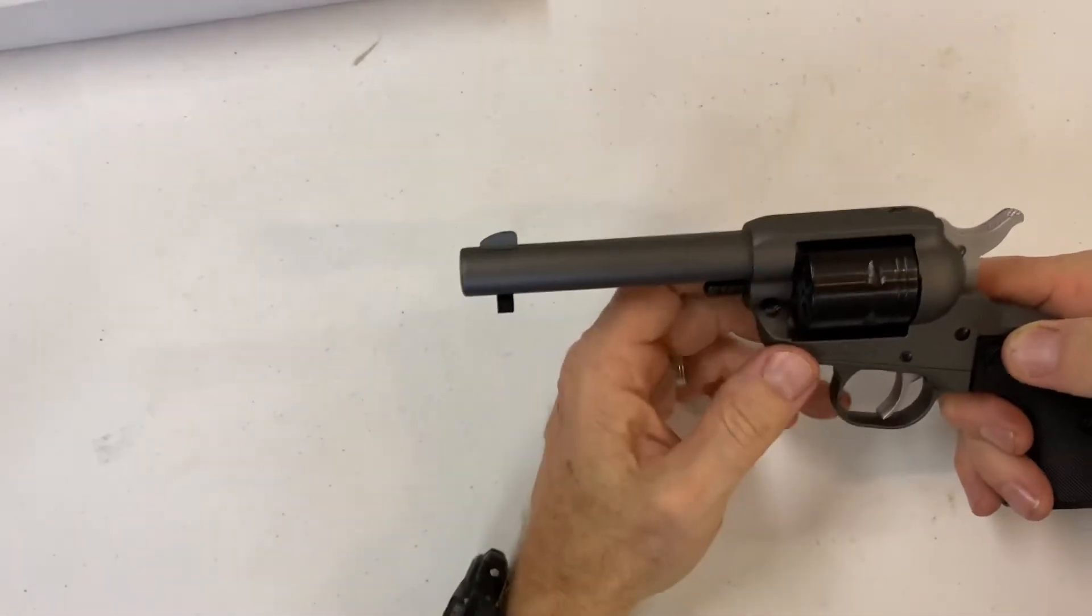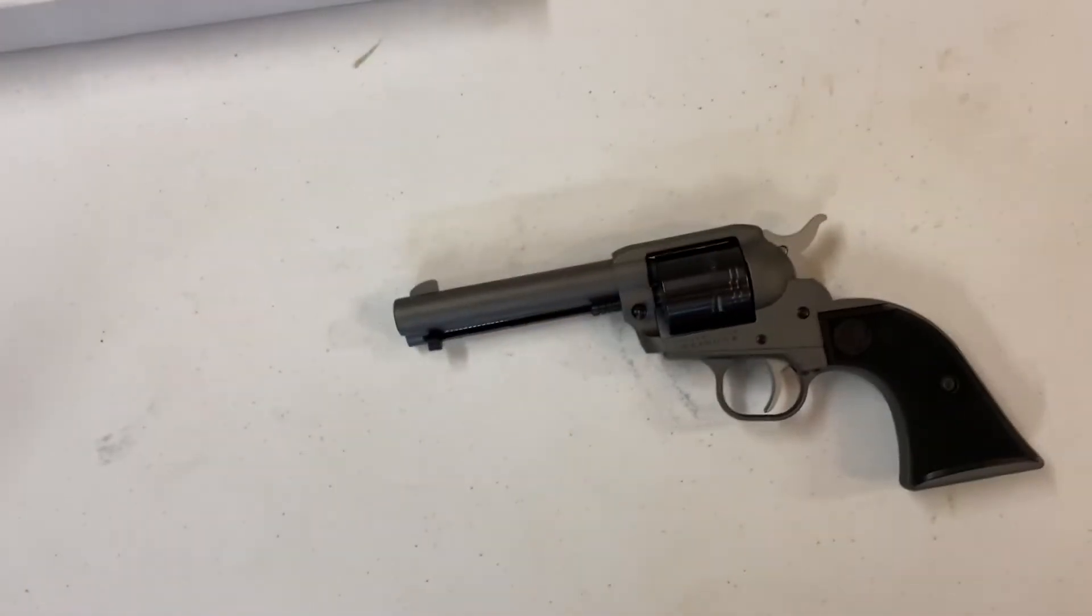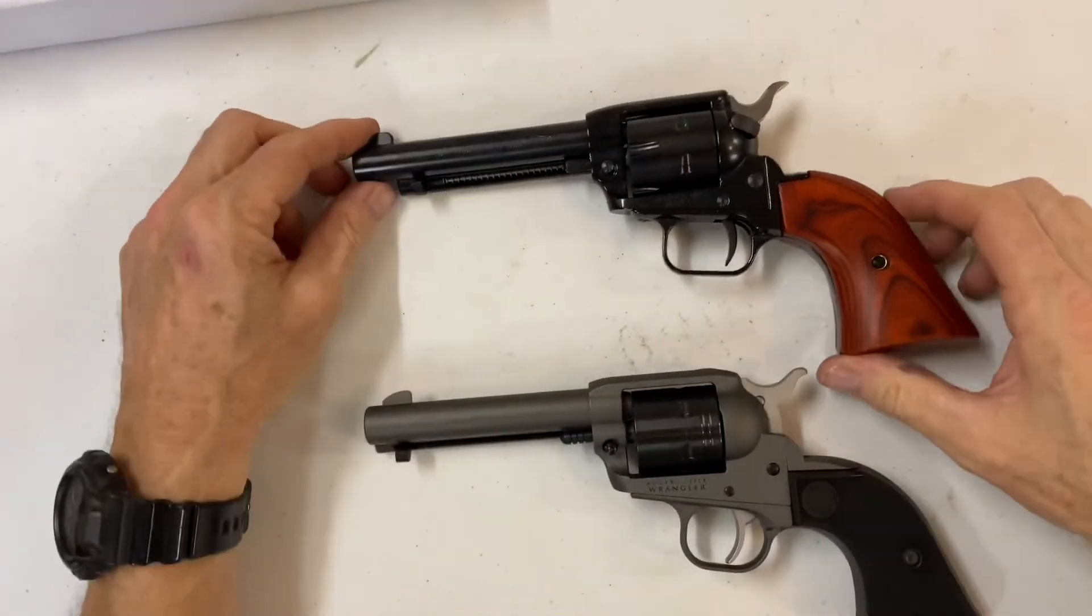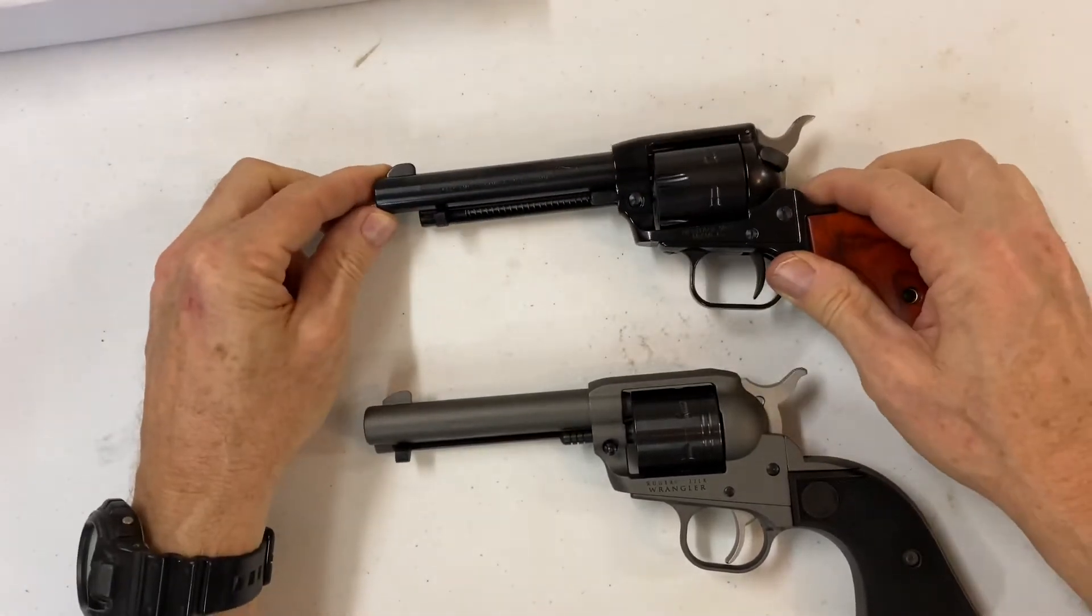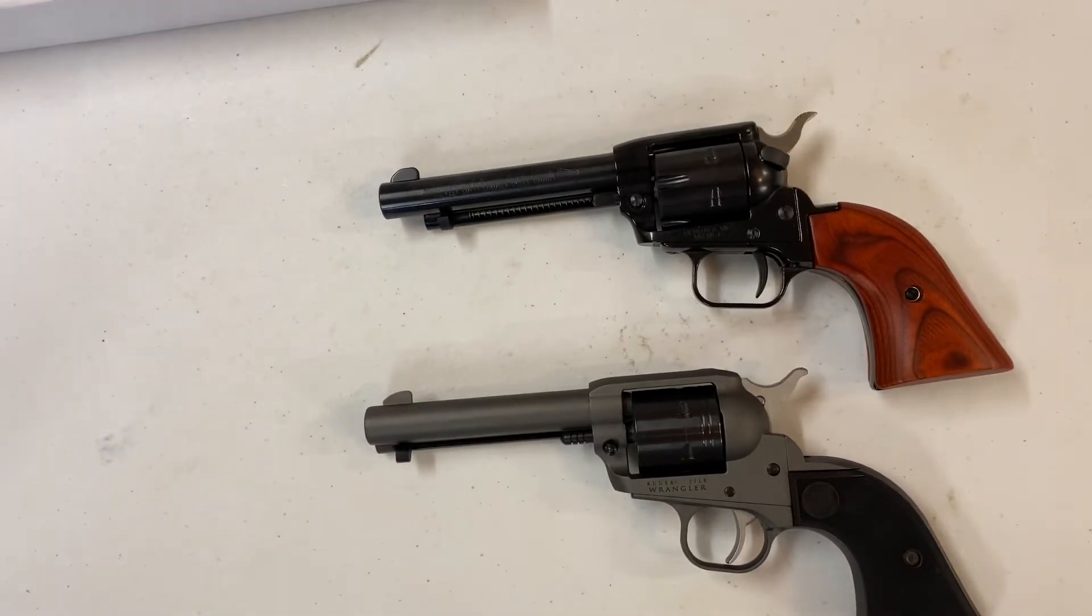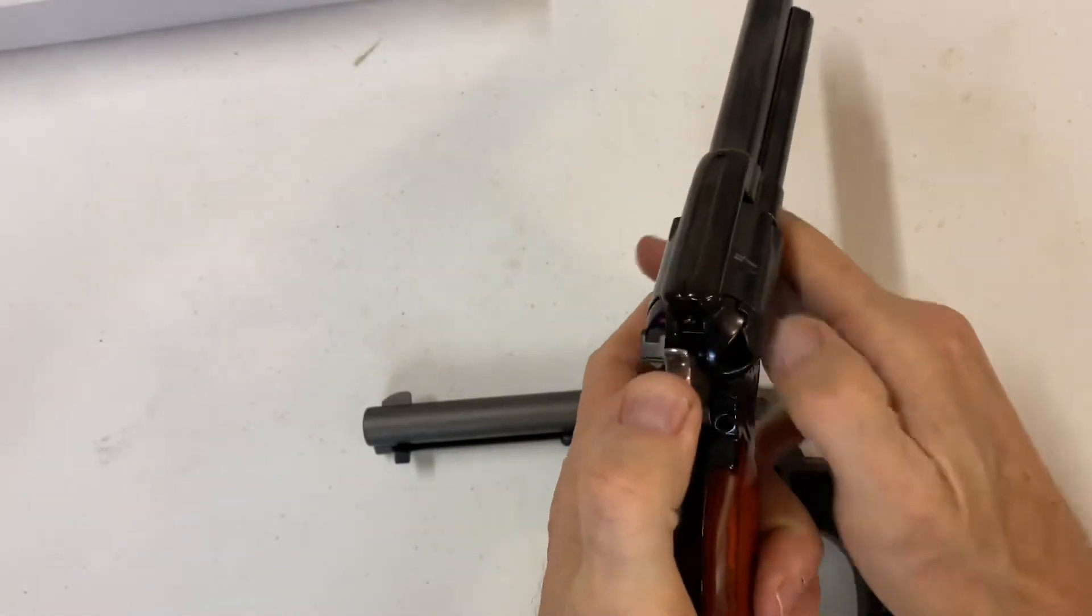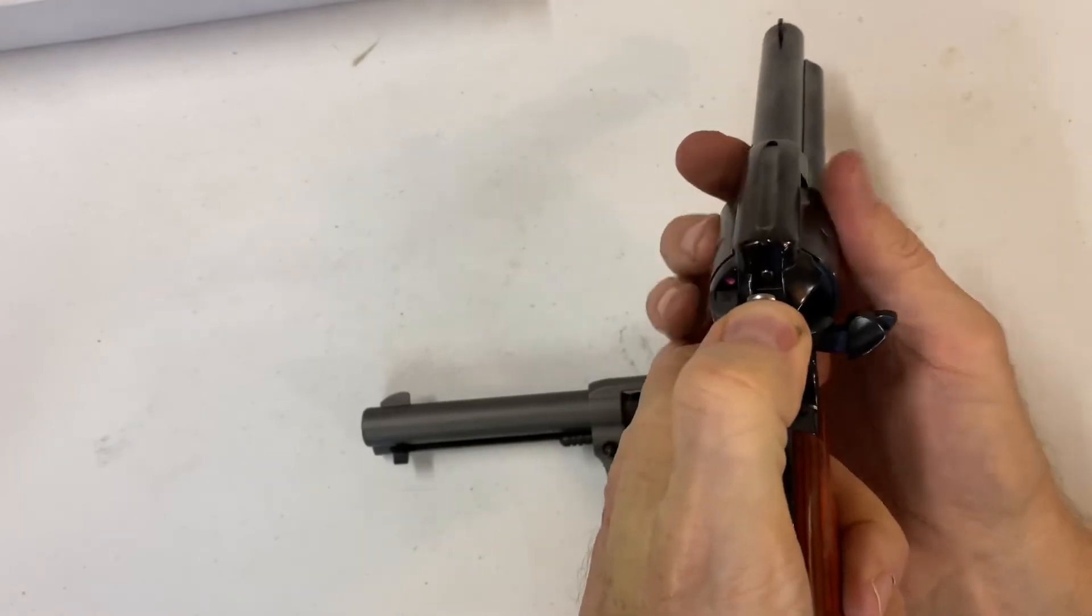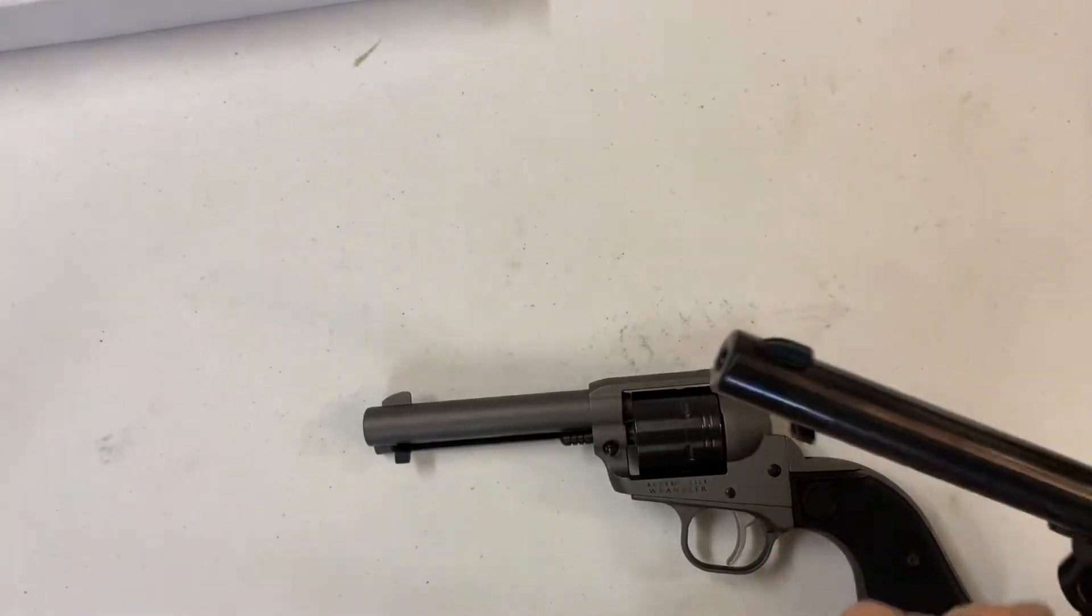What everybody compares this to is the Heritage Roughrider, which I have right here, which is a very cool gun too. Its specs are roughly the same. What's different about the Roughrider is you can't go back and forth like you can on the Ruger. I'll give you my pros and cons against both of these.